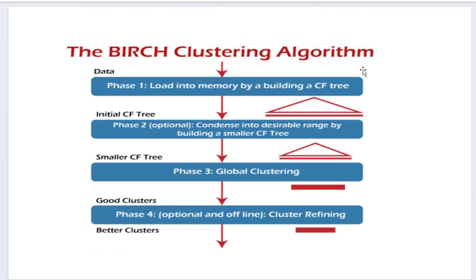The BIRCH clustering algorithm has four steps. First, load the complete data into memory. Second, initialize the cluster feature tree by constructing a smaller cluster feature tree. Third, perform global clustering using the k-means or k-medoids algorithm. Fourth, perform cluster refining — removing irrelevant points to produce very good final clusters.